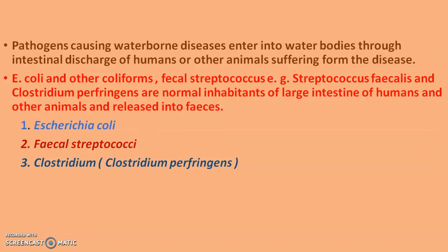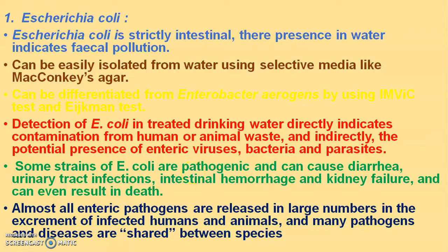There are three different types of indicator microorganisms. The first is E. coli, which is strictly intestinal, and its presence in water indicates fecal contamination. If there is an occurrence of pink color colonies on MacConkey agar, this presence of pink color colonies indicates the presence of coliforms or E. coli in that water sample.